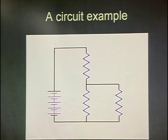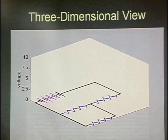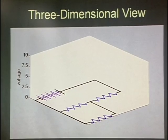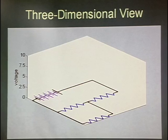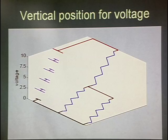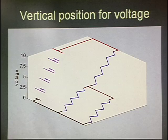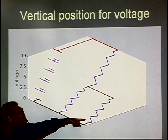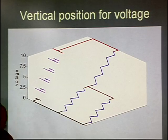Here's an example of a circuit drawn as a conventional schematic. What we do is lay it out in a three-dimensional view where the third axis is voltage. Right now it's off so there isn't any voltage. Then we turn on the voltage and you can see how that voltage distributes, dropping across different resistors in the circuit. You can see that these two resistors in parallel have the same voltage drop across them.